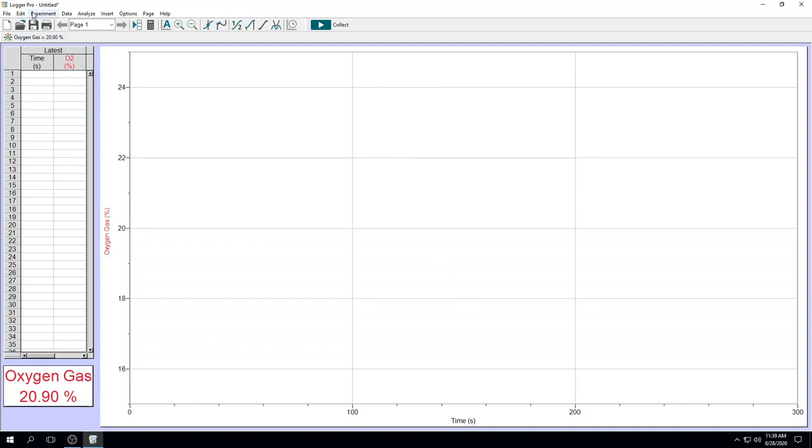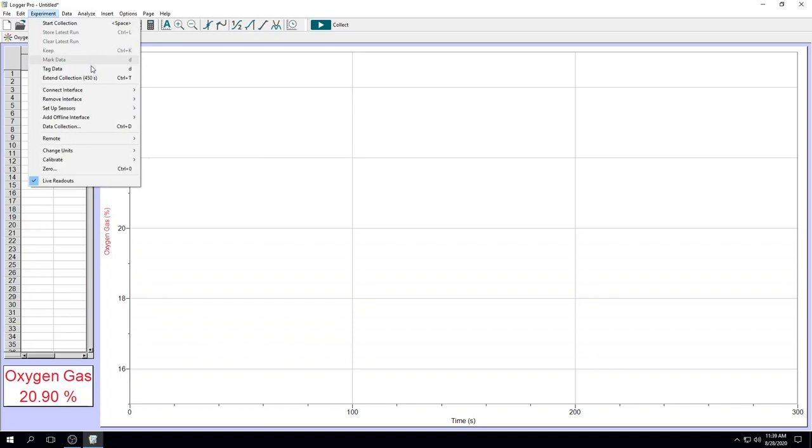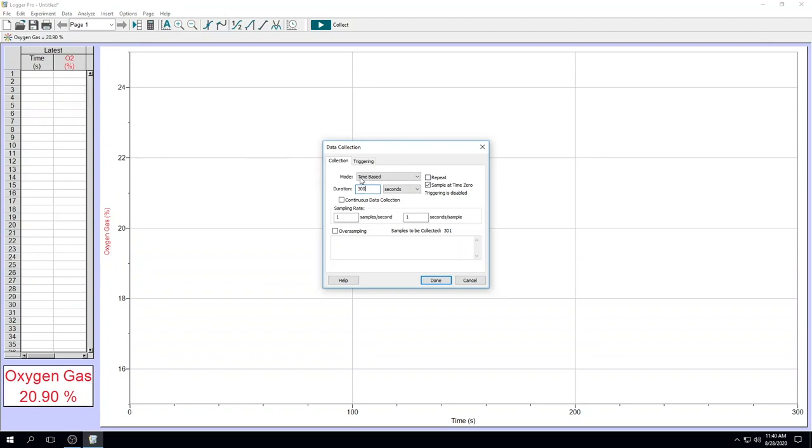Step two, you want to change the durations of data collection. In experiment, data collection, for the durations of 30 minutes, one sample per minute.